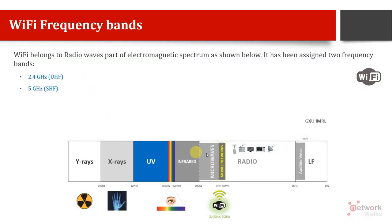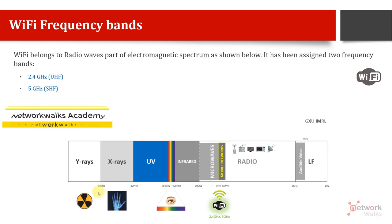Wi-Fi belongs to radio waves, part of the electromagnetic spectrum. Our spectrum starts from one hertz — one cycle per second, very low frequency — and goes up to 30 exahertz and beyond. It includes low frequency, radio waves, mobile networks, microwaves, infrared, and our visible light, which ranges from 400 terahertz up to 750 terahertz. Then we have ultraviolet up to 30 petahertz, then X-rays up to 30 exahertz, and so on.